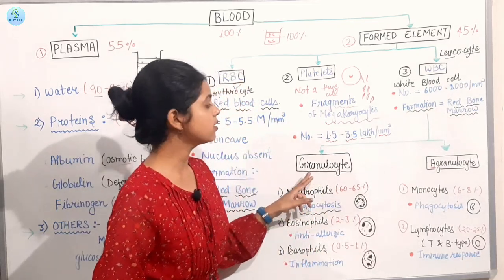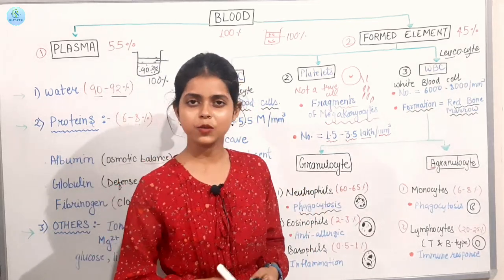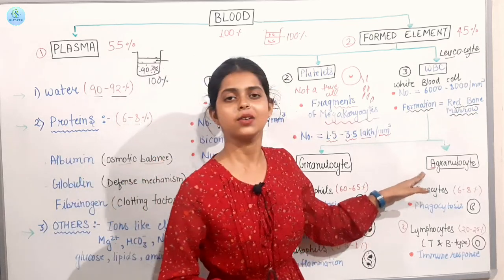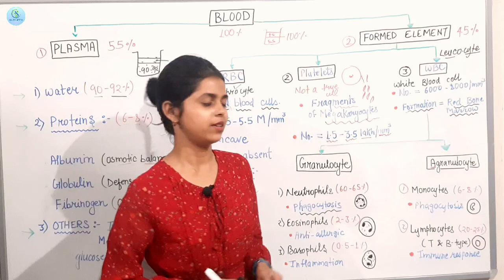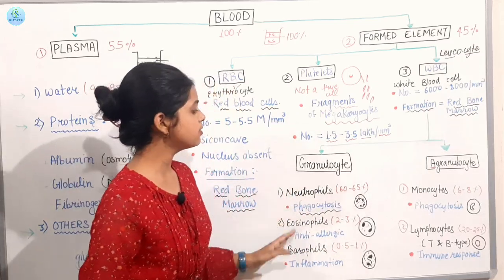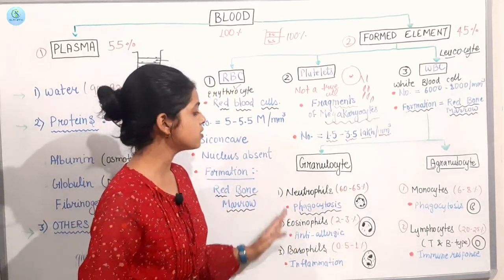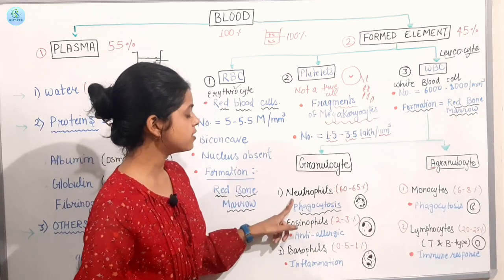First part is our granules present, which is our granulocyte division. We can see that there are many cells. The first cell is our neutrophils, which is 62-65%.